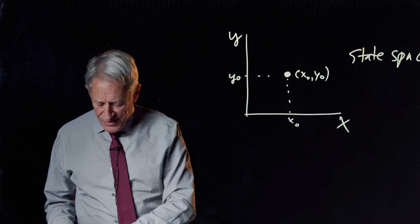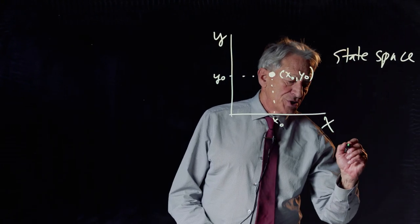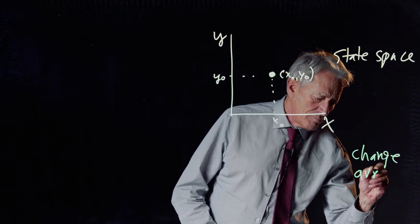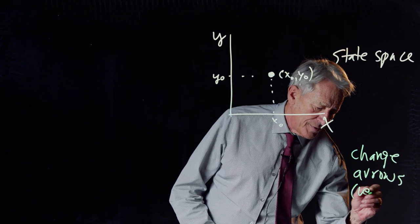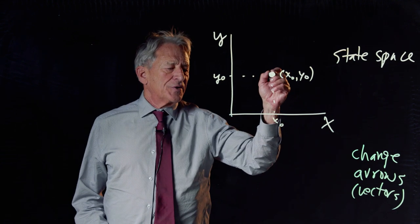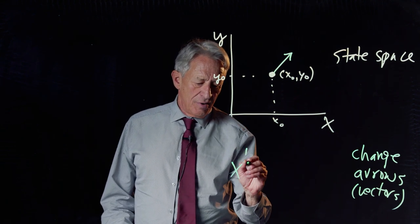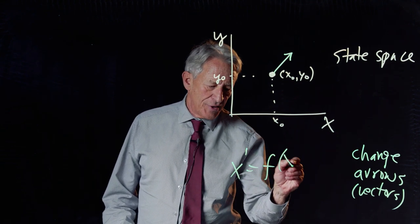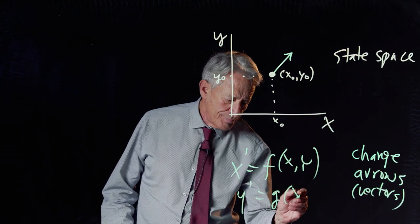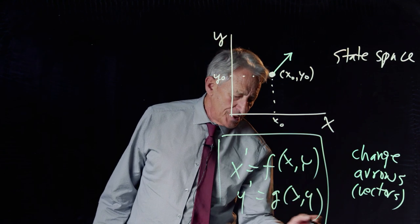And then the second concept that we developed was the concept of the change arrow, or if we want to be fancy, the change vectors. And the change vectors are given to us by the model or the differential equation, which is as usual written in this form. And the differential equation, you recall,